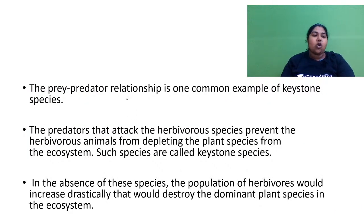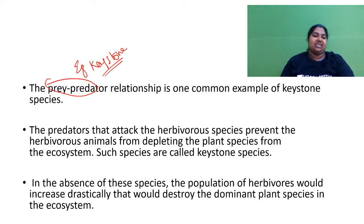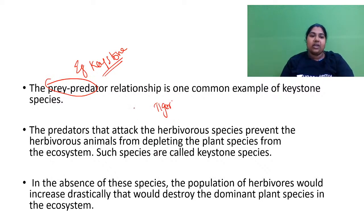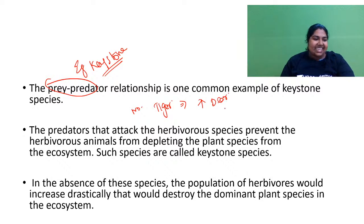Keystone species are present in low abundance, but their importance is seriously very high. If you remove this species, your ecosystem is going to collapse. A common example is the prey-predator relationship. Consider the tiger — if there is no tiger, what will happen? There will be an increase in the amount of deer.